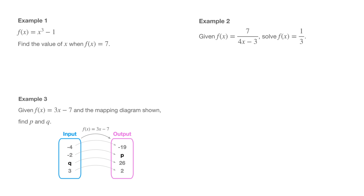For the first example, we're told that f of x is equal to x cubed minus 1, and we are asked to find the value of x when f of x equals 7. Another way of saying that is that we have to find which input value x leads to the output value 7.